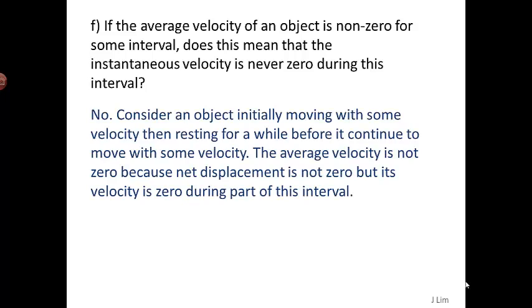Consider an object initially moving with some velocity, then resting for a while before it continues to move with some velocity. The average velocity is not zero because net displacement is not zero, but its velocity is zero during part of this interval.